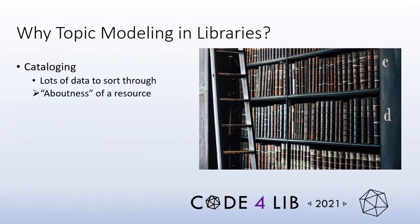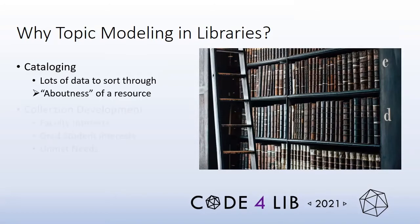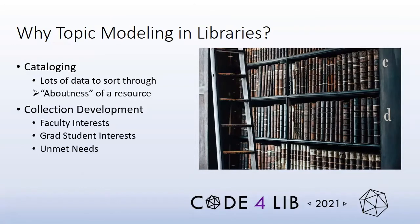So what can topic modeling do for libraries? Two areas of interest in this technology are found in cataloging and also collection development. In the first area, topic modeling can help catalogers efficiently sift through lots of text to provide information relating to the aboutness of many library resources, making them more discoverable through subject searching. In the second area, topic modeling can help provide insights into research interests at an institution, thereby helping more fully align purchases of library materials with research directions. This latter area is where we'll focus this discussion.